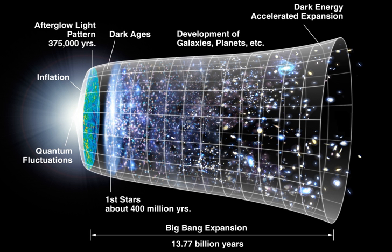The Big Bang theory offers a comprehensive explanation for a broad range of observed phenomena, including the abundance of light elements, the CMB, large-scale structure, and Hubble's law. The framework for the Big Bang model relies on Albert Einstein's theory of general relativity and on simplifying assumptions such as homogeneity and isotropy of space. The governing equations were formulated by Alexander Friedman, and similar solutions were worked on by Willem de Sitter. Since then, astrophysicists have incorporated observational and theoretical additions into the Big Bang model, and its parametrization as the λ-CDM model serves as the framework for current investigations of theoretical cosmology.